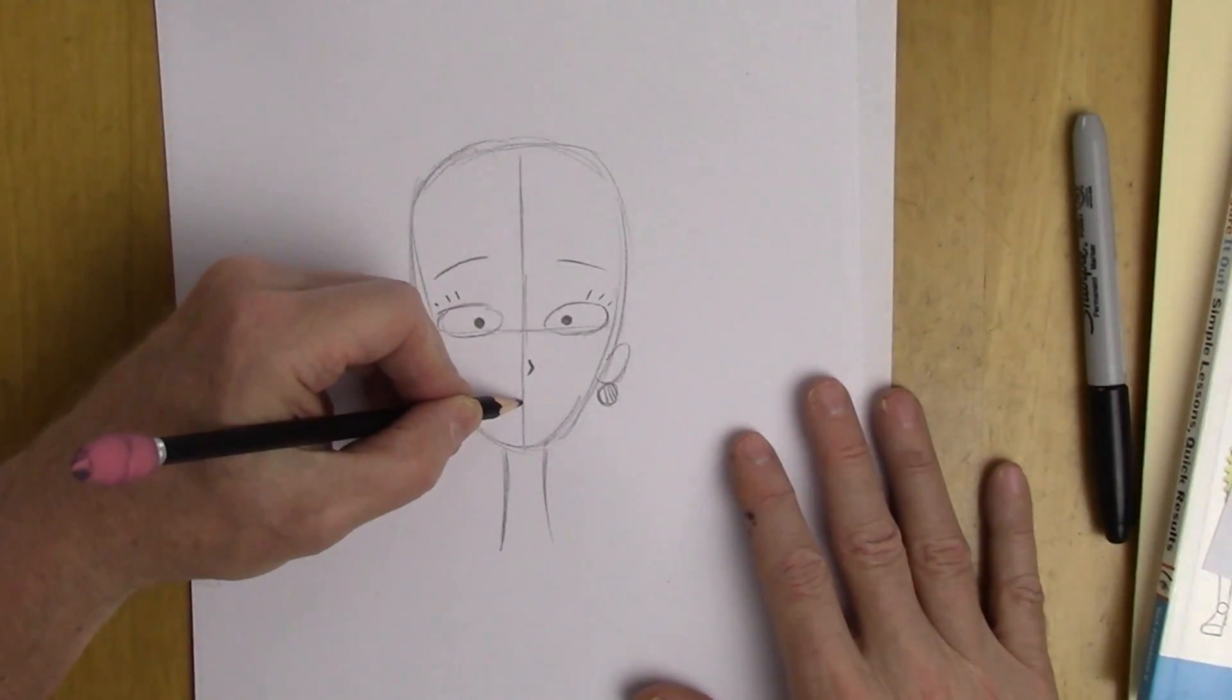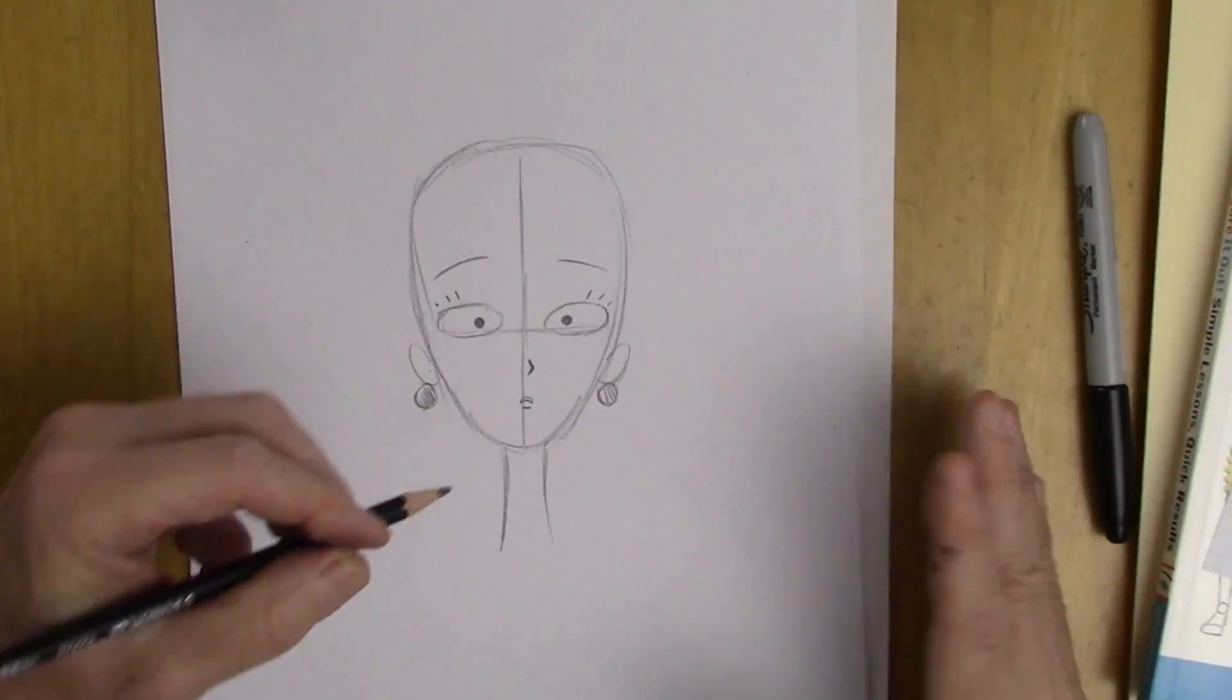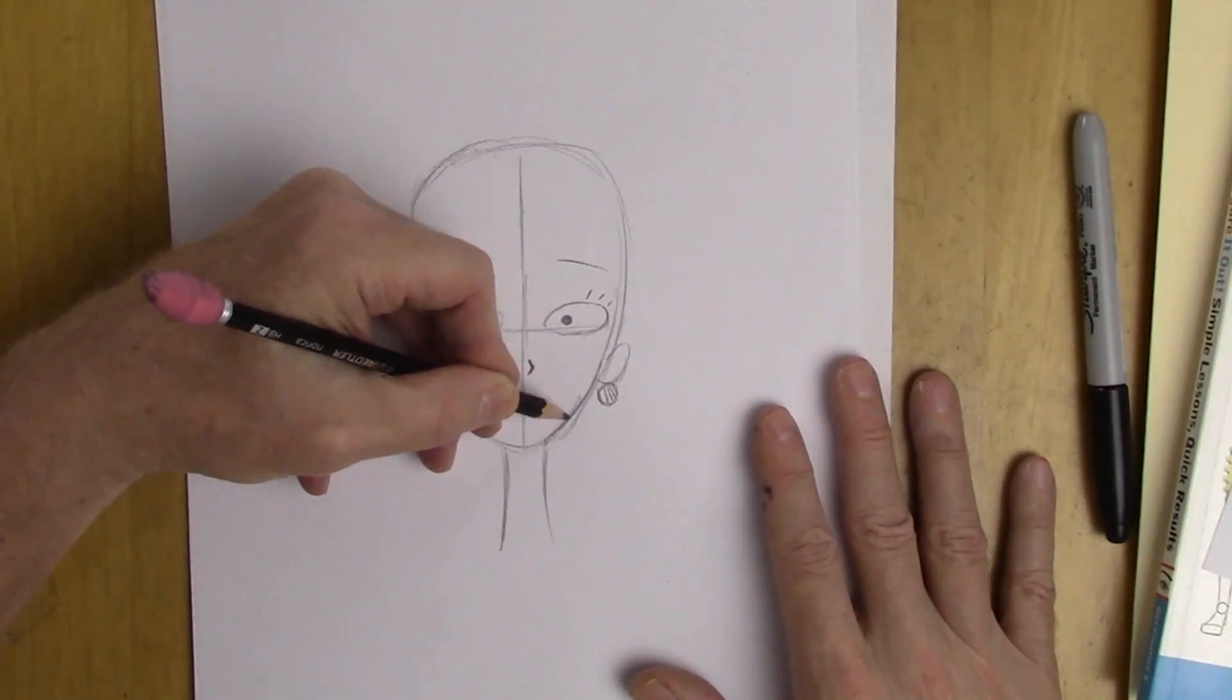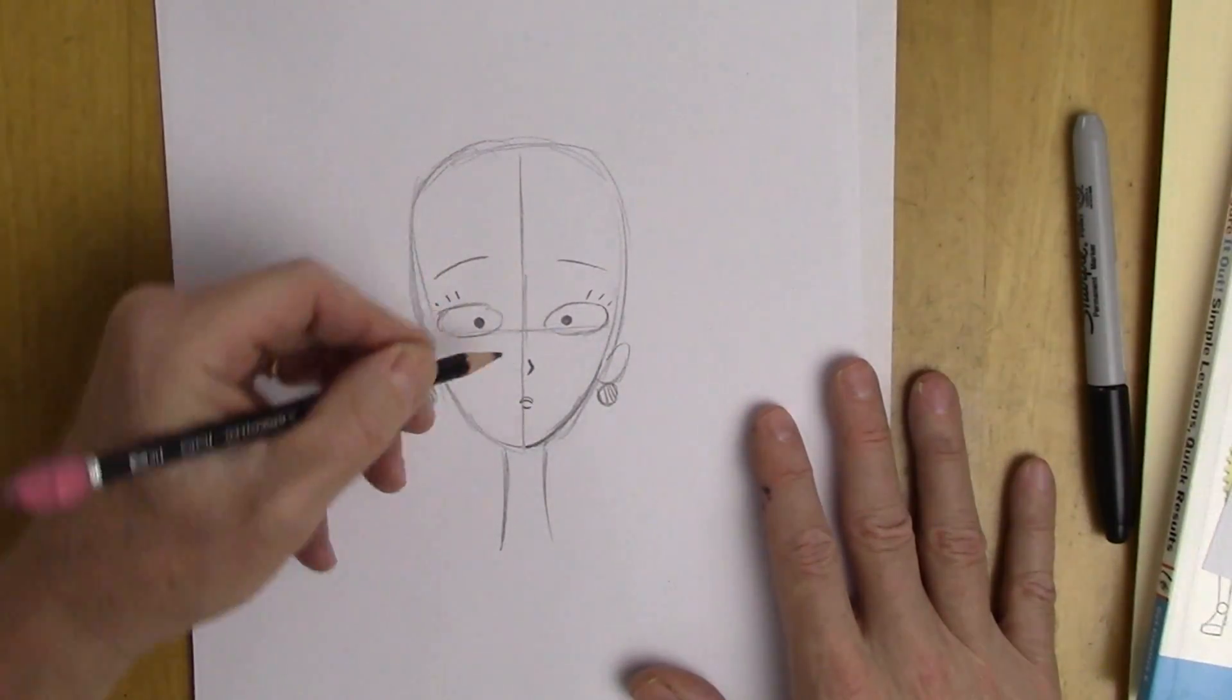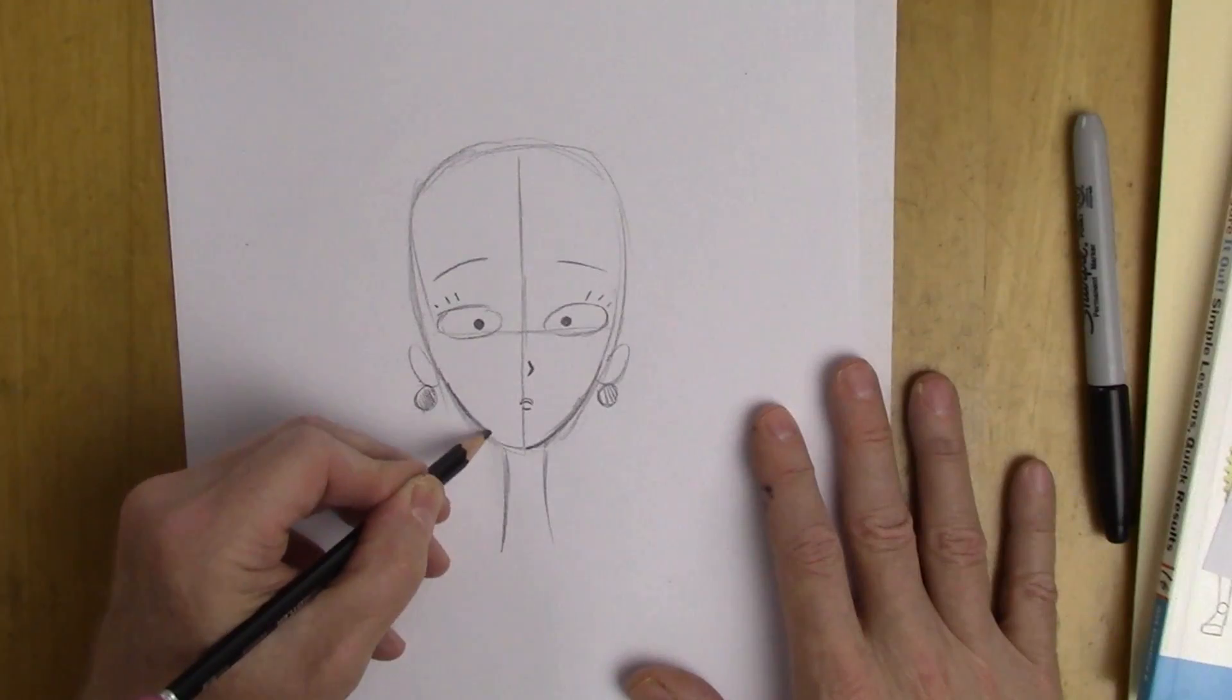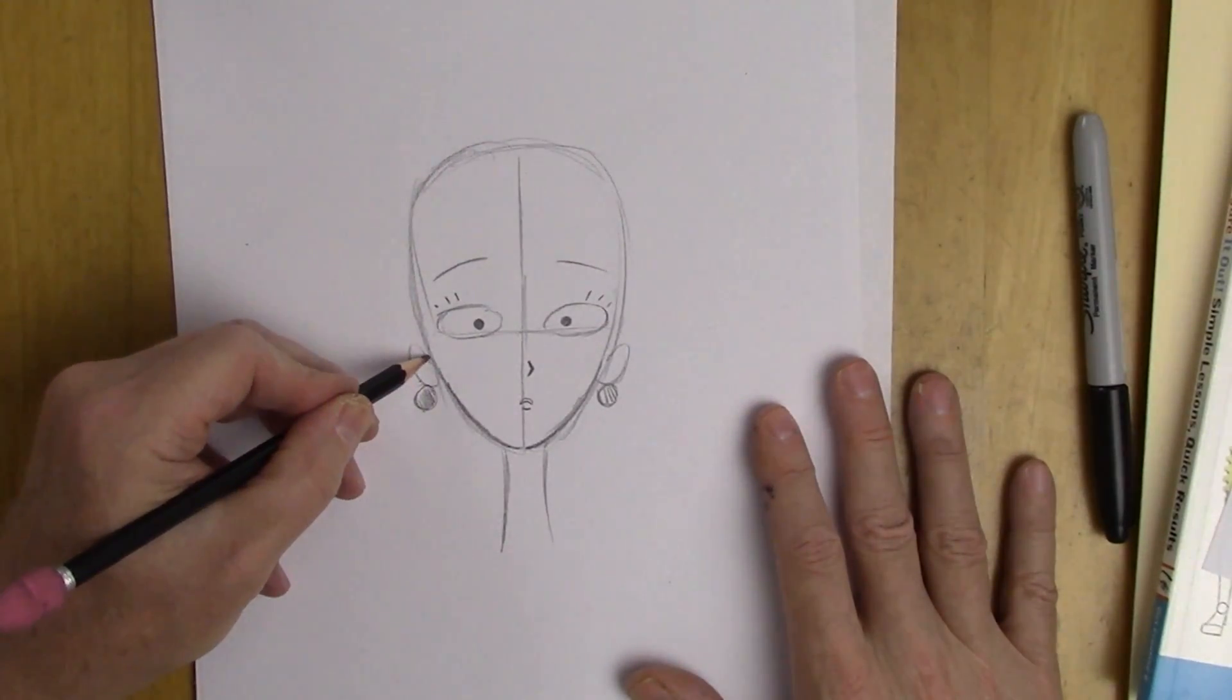So also have a little bit of a mouth here and tiny upper lip, tiny lower lip. Not more than that. We'll bring this chin down like this. We'll darken that in and keeping it symmetrical.